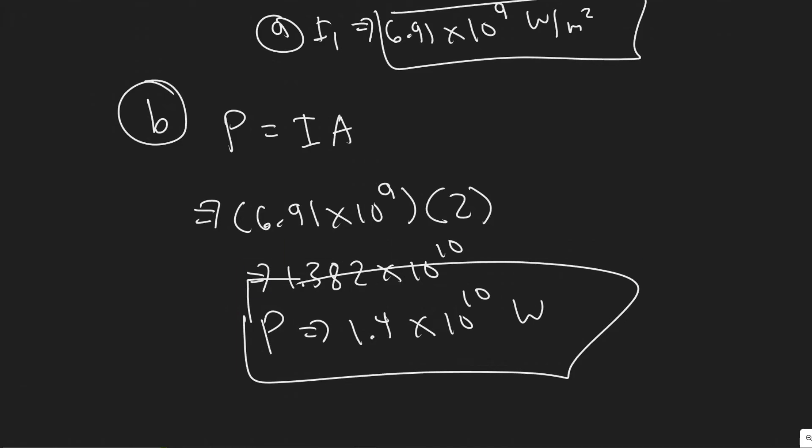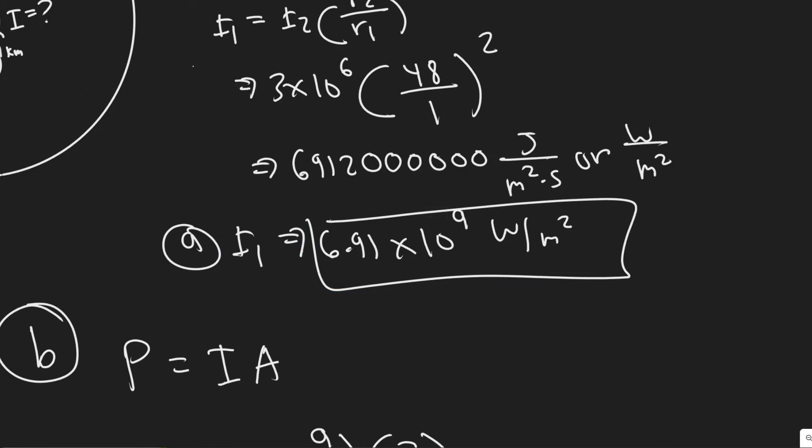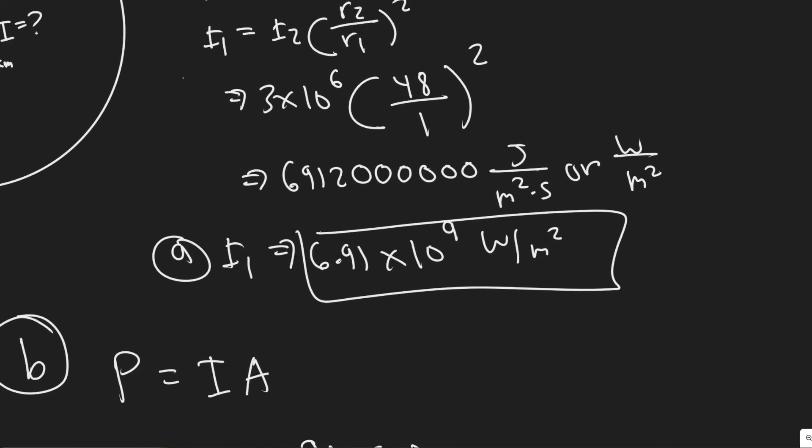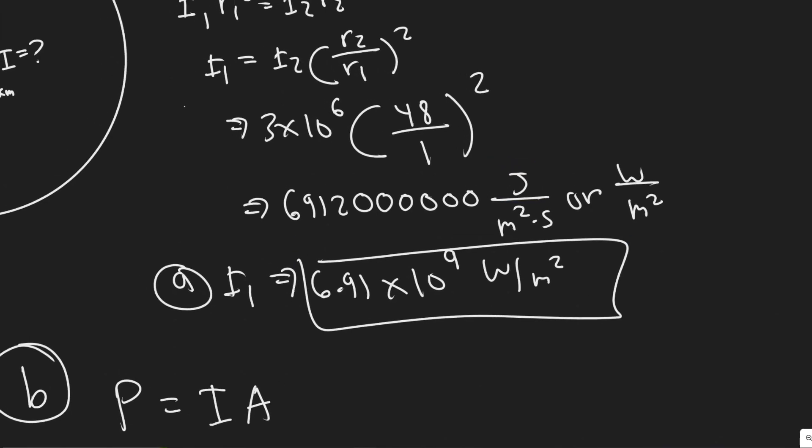But yeah, so B, the rate of energy or the power, 1.4 times 10 to the 10 watts. Your answer to A was 6.91 times 10 to the 9 watts per meter squared. Or you can say it this way. I believe you say it joules per meter squared times seconds.